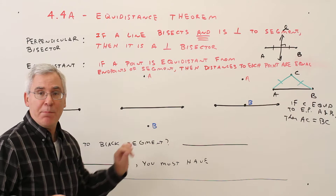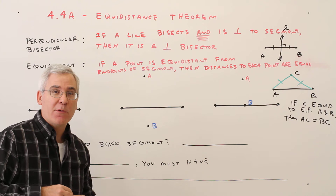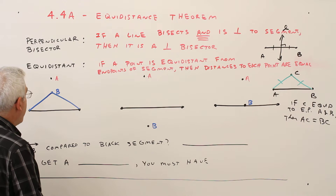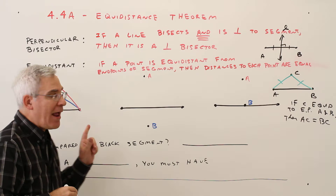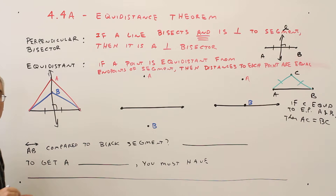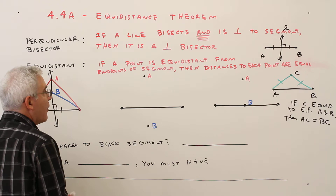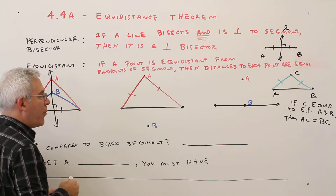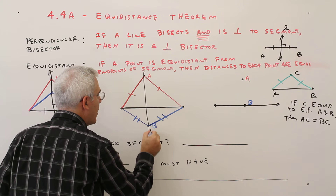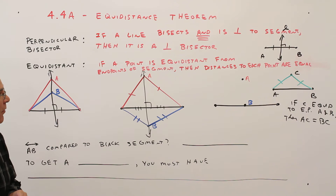Now we're going to go over a little activity. We've got these three black segments with points A and B, and we're going to try to discover a relationship between a segment and a perpendicular bisector. In blue, from point B, we're going to go to the endpoints of the black segment. In red, we're going to go to the endpoints of that segment. If A and B are equidistant to those endpoints, we get a perpendicular bisector. Over here, we've got points on opposite sides — A equidistant to those endpoints, B equidistant to those endpoints — and if we connect points A and B, we again get a perpendicular bisector.